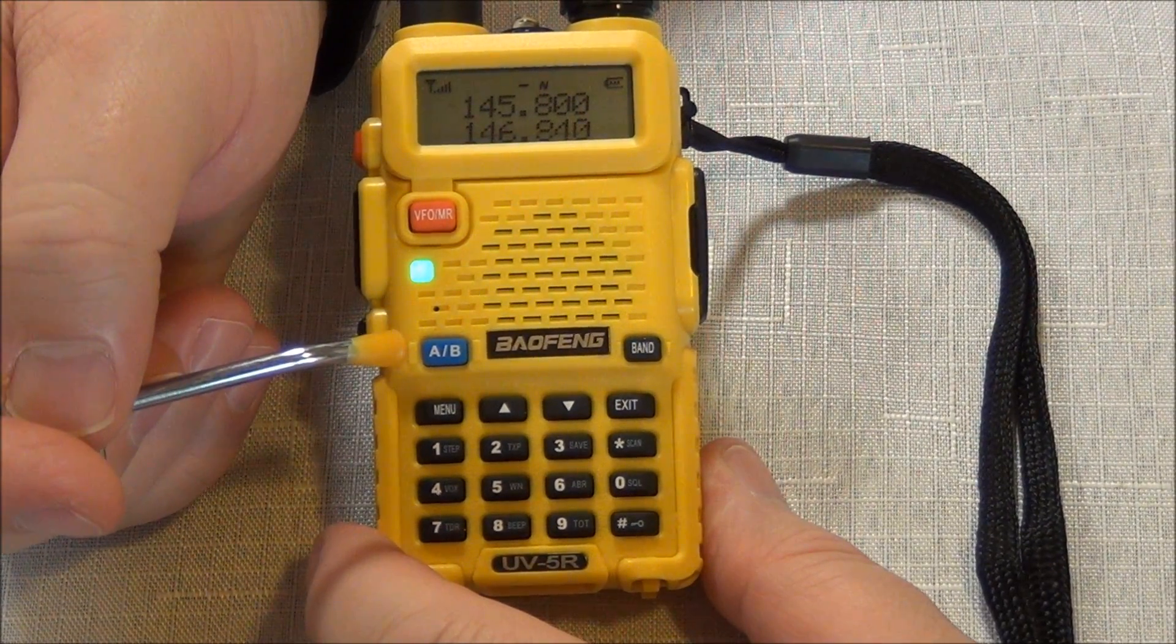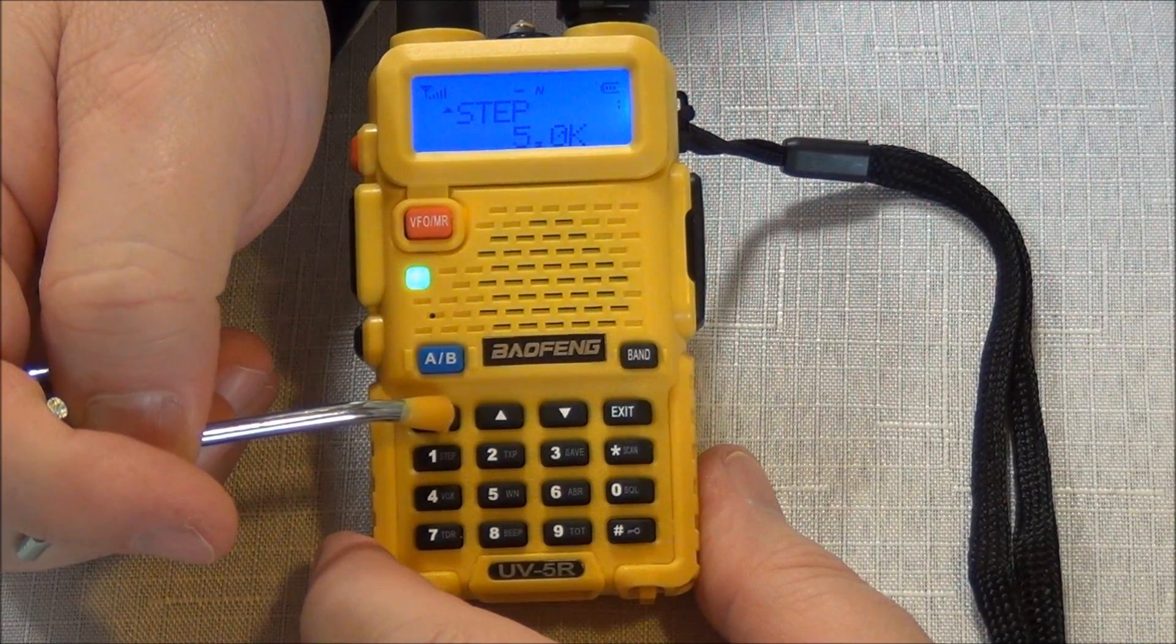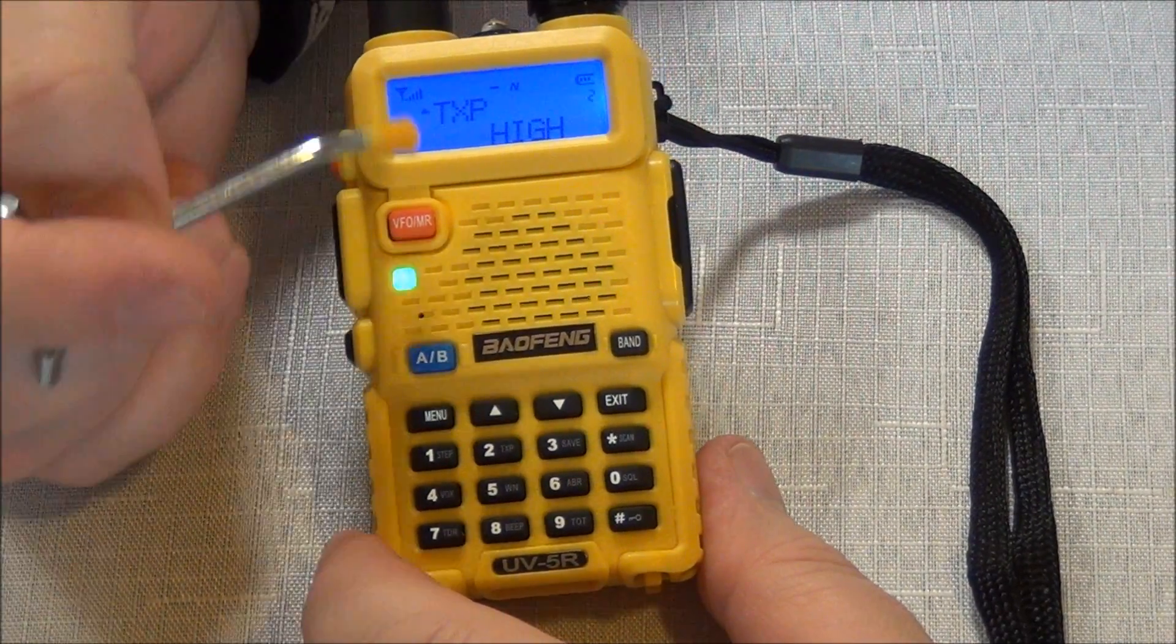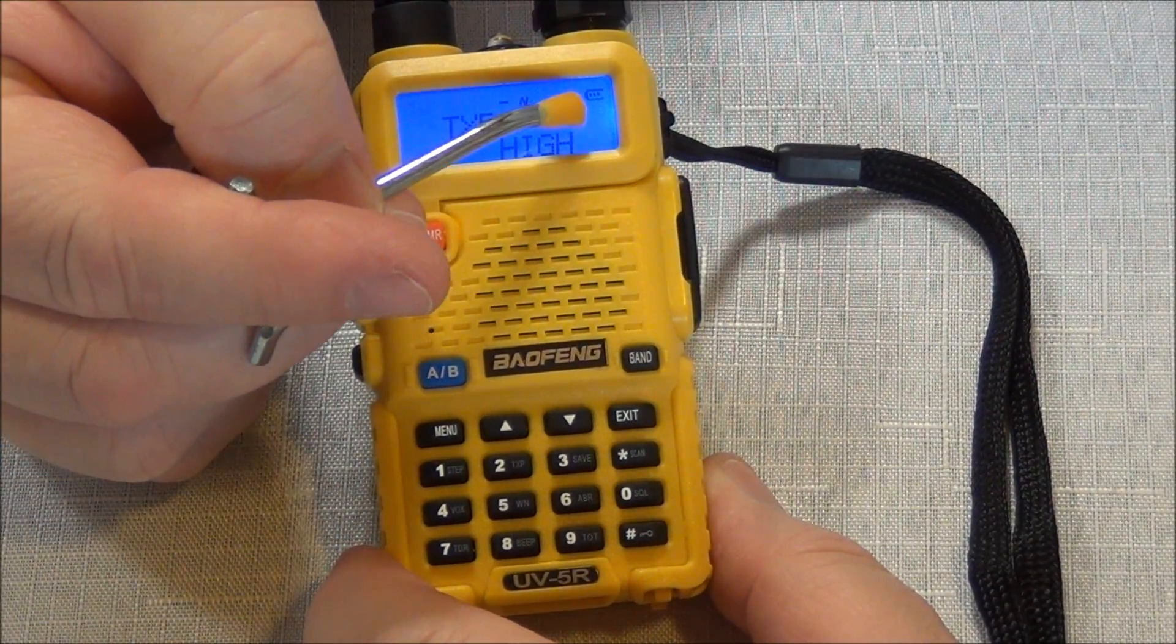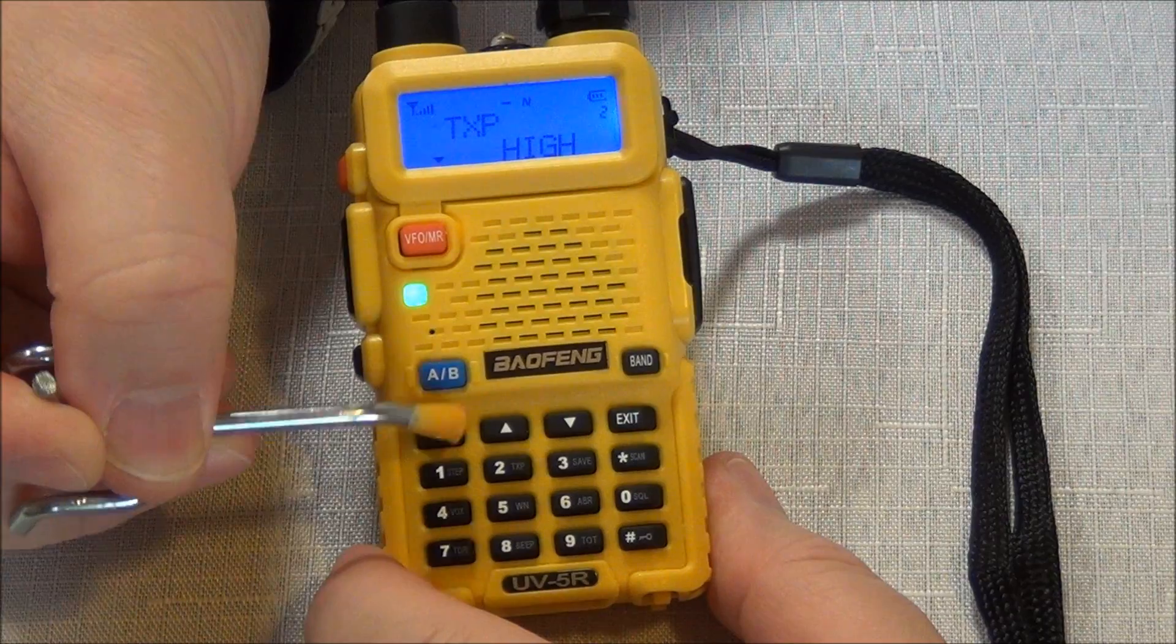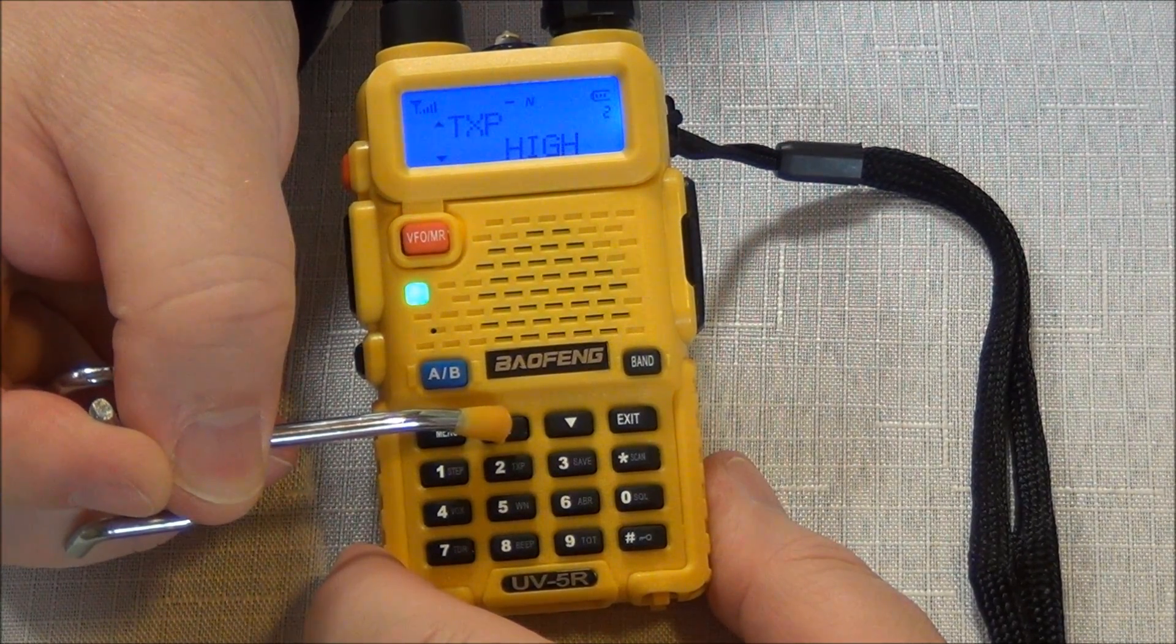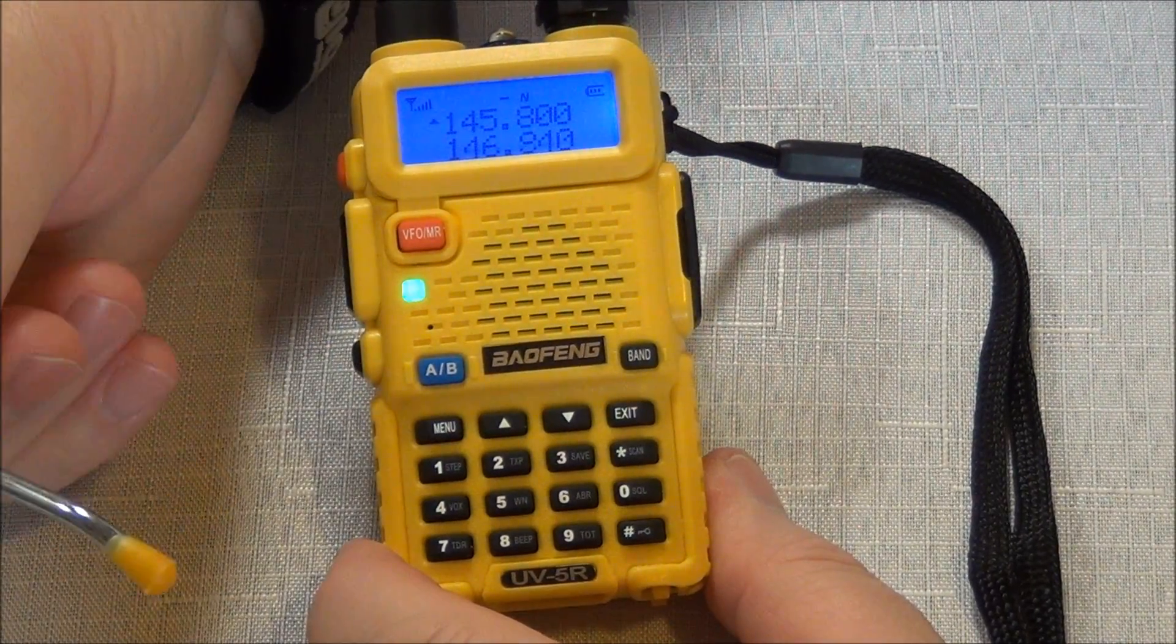The next thing we're going to do is program the transmit power. We can do our menu again. We're in step mode. We can go up. We're now in transmit power, which is number two. You can see we have that in high. You can change that by hitting menu again. Then up and down. You can see your options are low and high. Menu select, exit to come back.